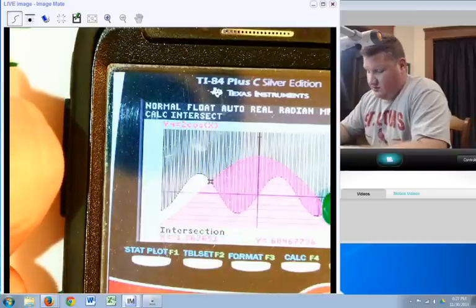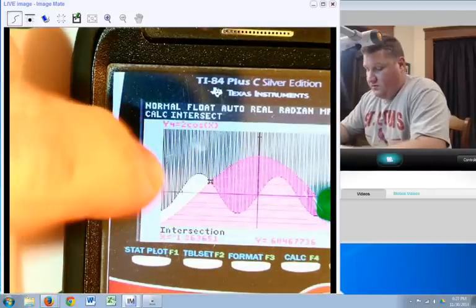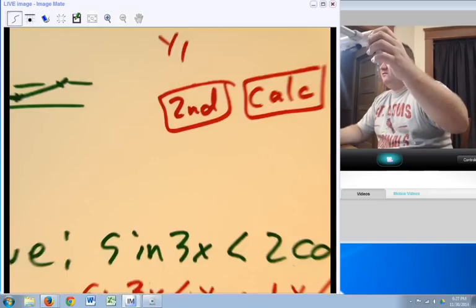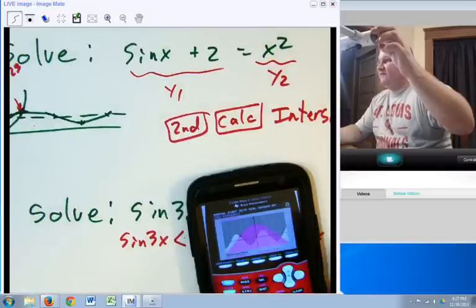And so once you know the two points of intersection, you can say it's either between the two, or it's less than this one, greater than this one. So, it allows you to break up one statement into two statements, graph them separately, and then go from there.